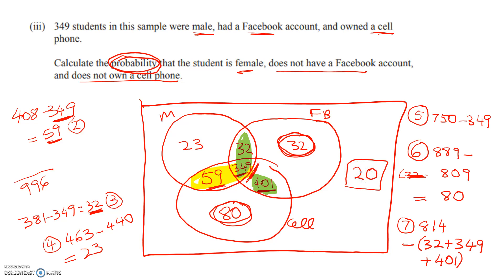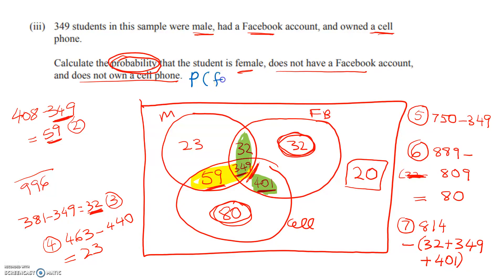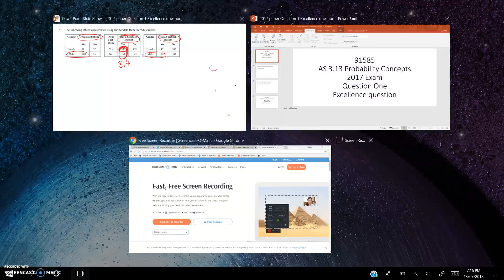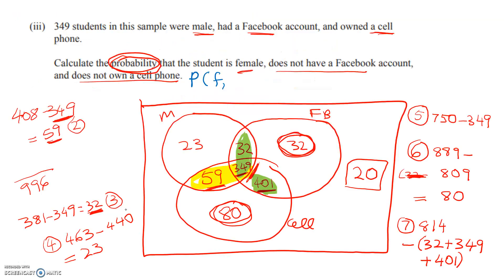Now don't forget, we've got to calculate the probability, not just the number, which is 20. So probability of female, no Facebook, and no cell is equal to a mighty 20 out of 996.